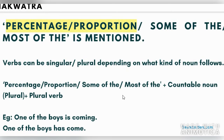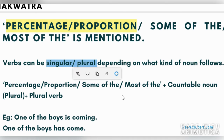My next rule is about percentage or proportion. For example, '40% of the boys' or '40% of the sugar,' or a proportion like '1 third of the boys,' '1 half of the boys.' How will we determine the verb? You don't have a hard and fast rule here. You will have to look at the noun that follows — whether it is singular or plural — to decide the verb.